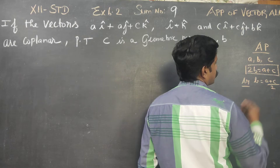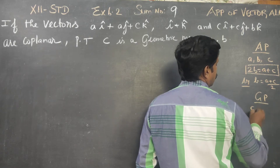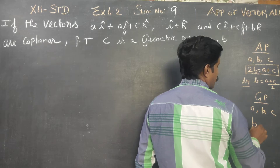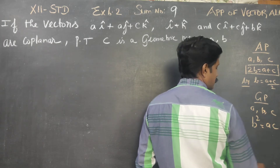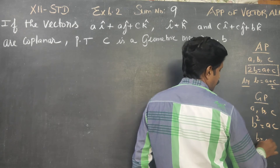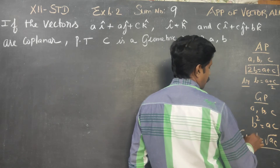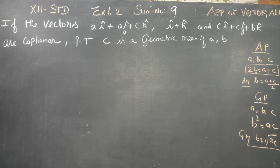And geometric progression: for A, B, C, the condition for geometric progression is B squared equals A times C, or B equals the square root of A times C. This is called the geometric mean.